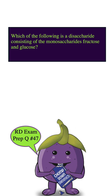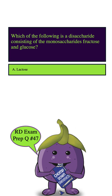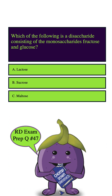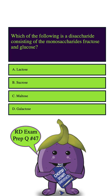Which of the following is a disaccharide consisting of the monosaccharides fructose and glucose? A. Lactose. B. Sucrose. C. Maltose. D. Galactose.